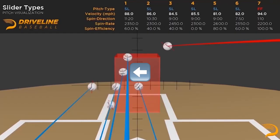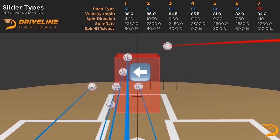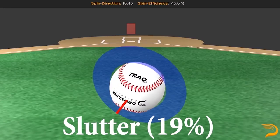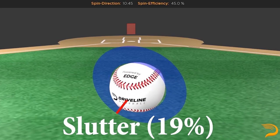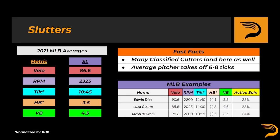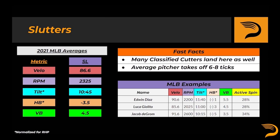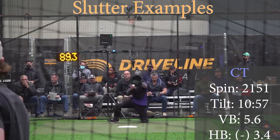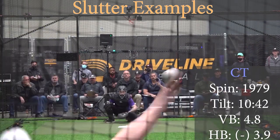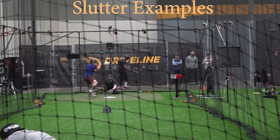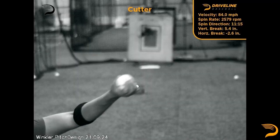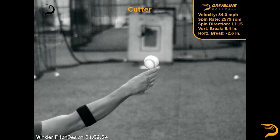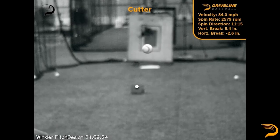Next up, we'll look at the slutter, which is the middle ground between the standard slider and the cutter. This was a very common slider variant in 2021, with the pitch making up nearly 20% of all classified sliders. On average, these pitches were thrown about 86.5 miles per hour and had nearly equal vertical and horizontal movement. The tradeoff in killing vertical break allows it to be thrown a bit slower relative to the cutter since it will drop more. Several big-name pitchers feature this slider, including Jacob deGrom, Edwin Diaz, and Lucas Giolito. At release, the pitch will have more gyroscopic spin relative to a cutter. The biggest differentiator between this pitch and a standard slider at release is that the pitcher will be a bit more behind the ball as opposed to just pulling down on the side of it and slightly around it.